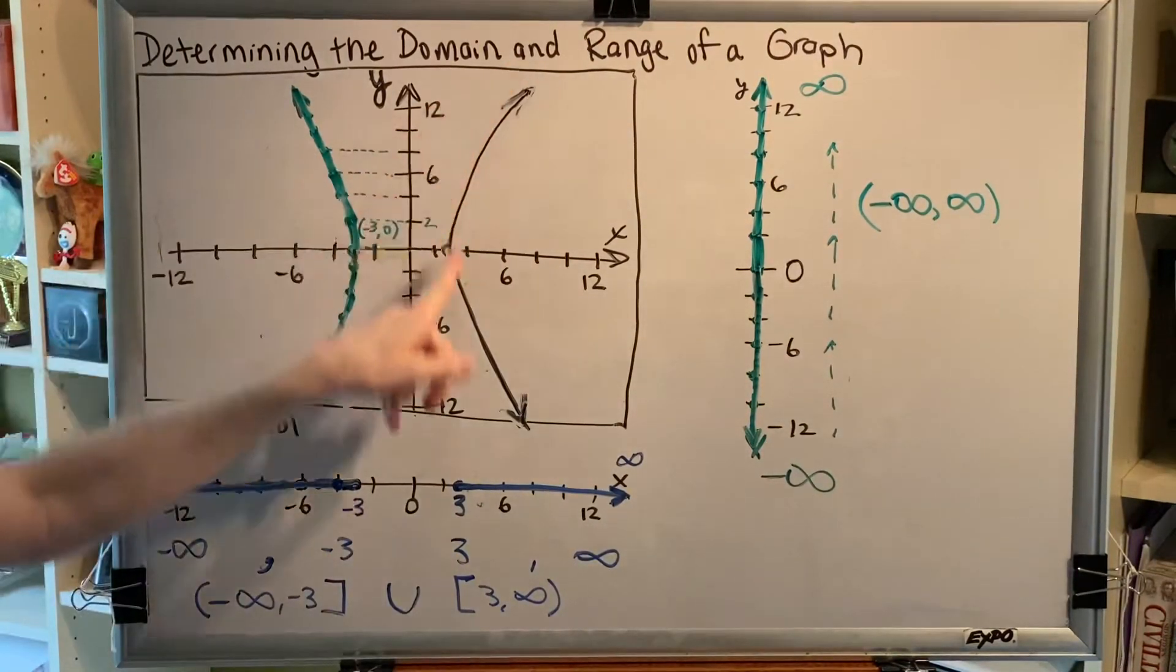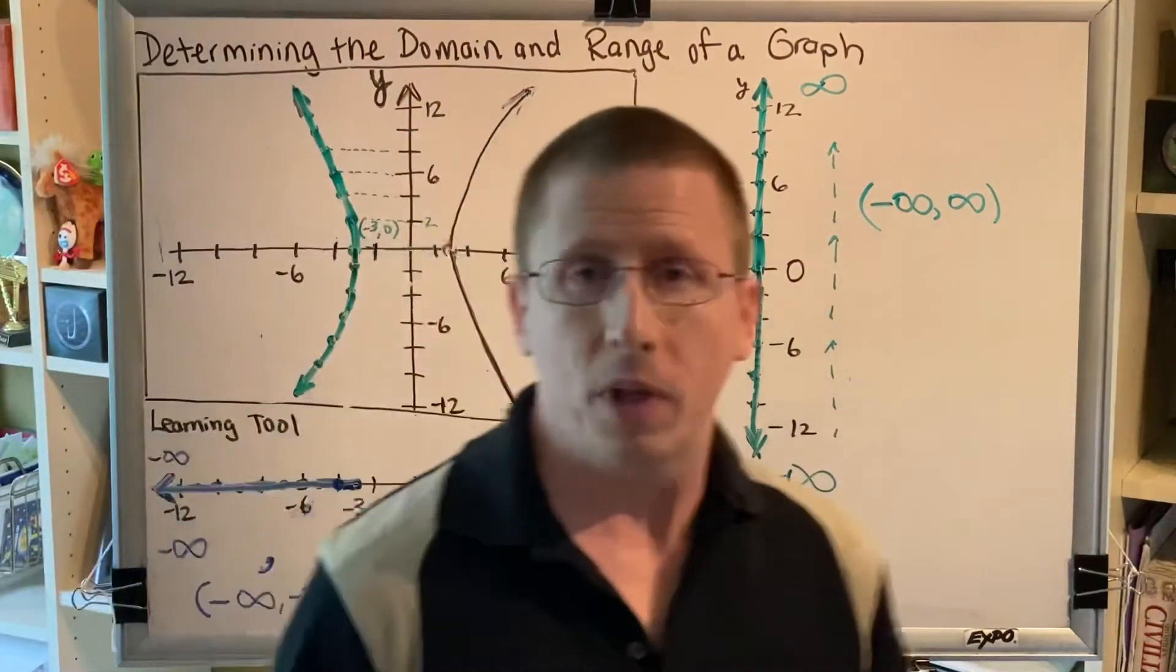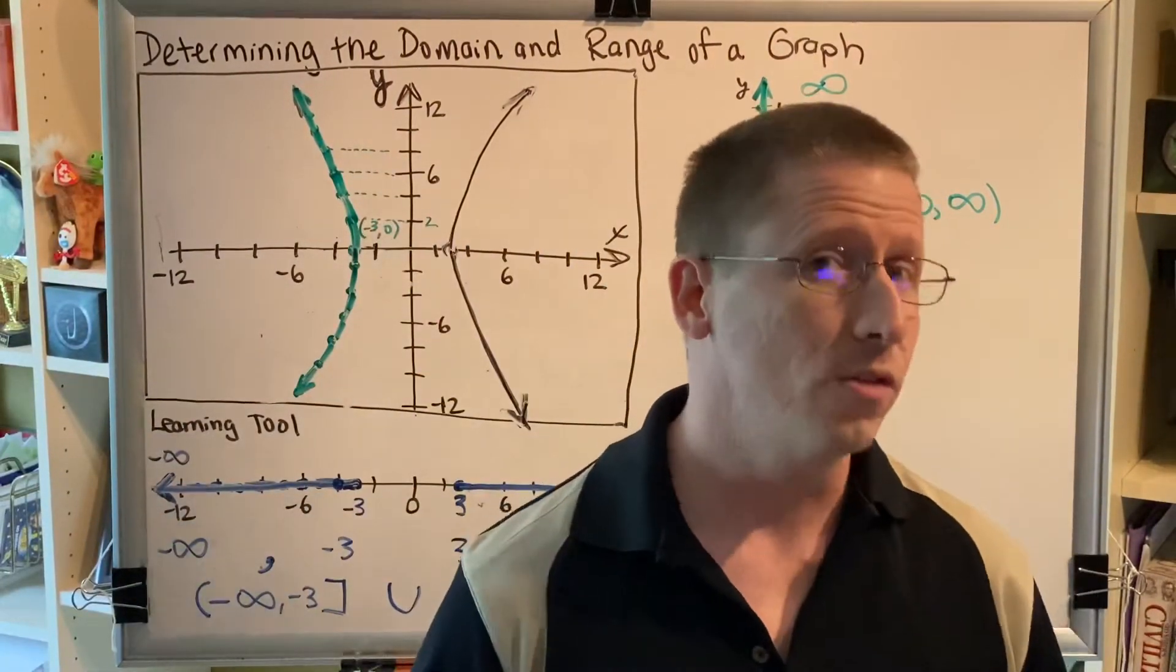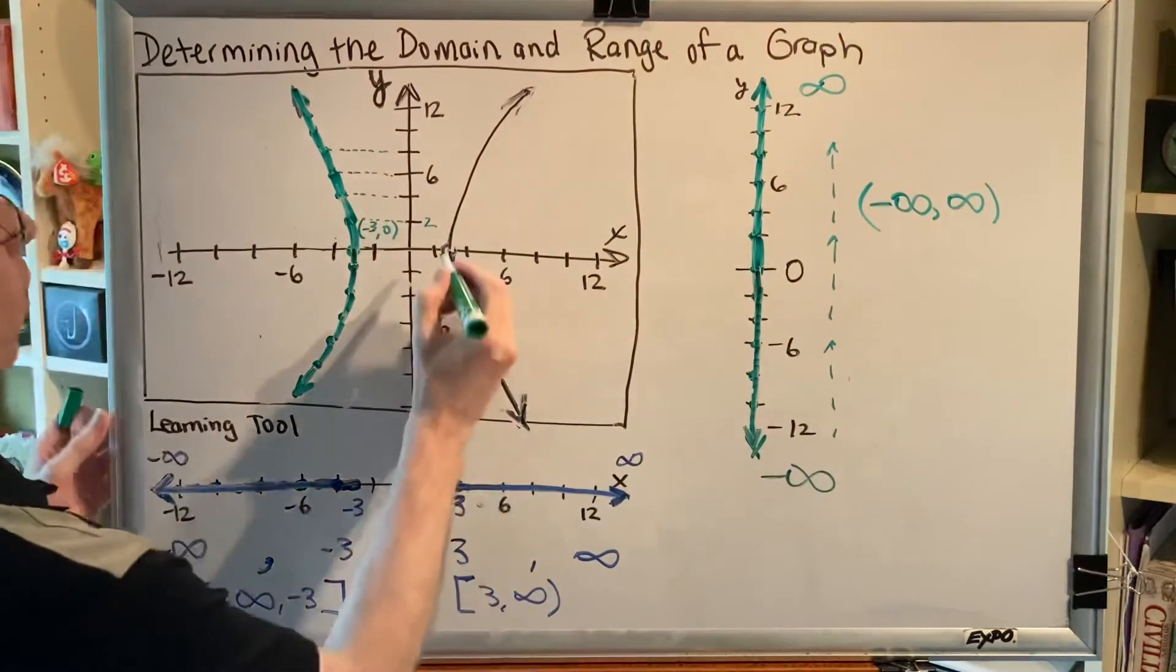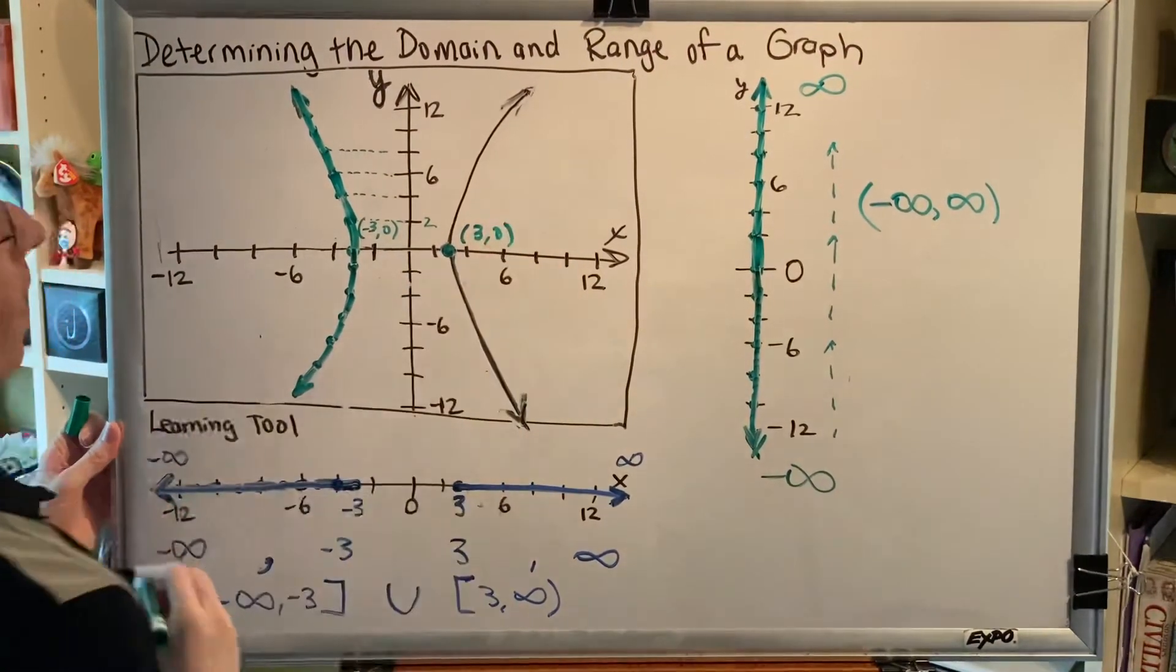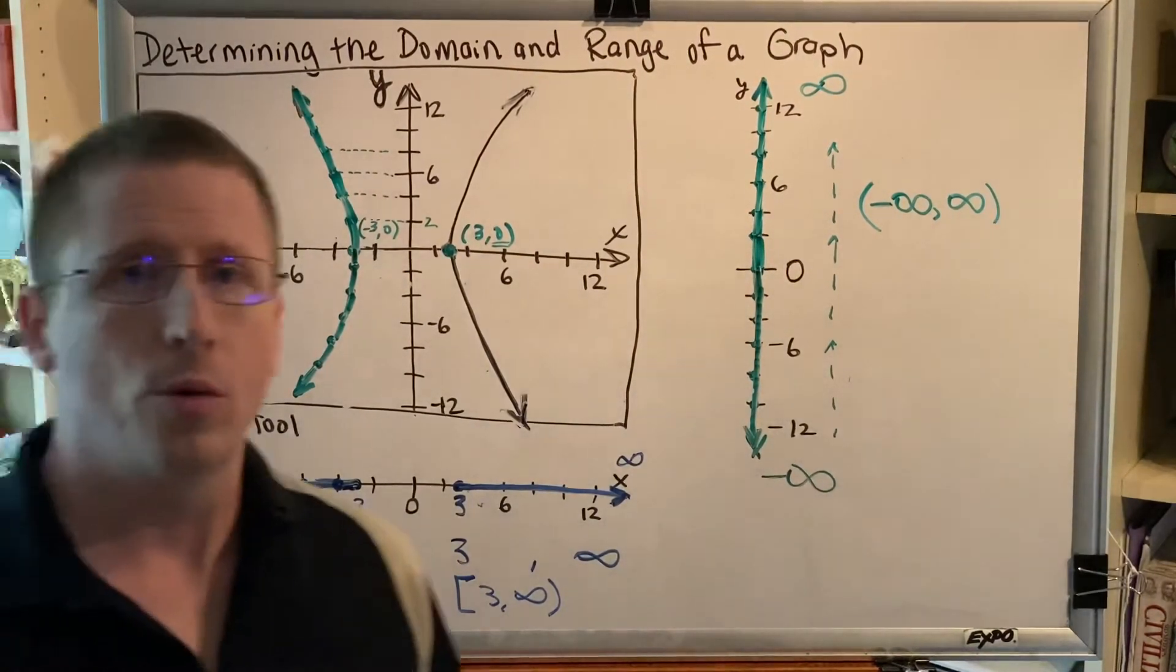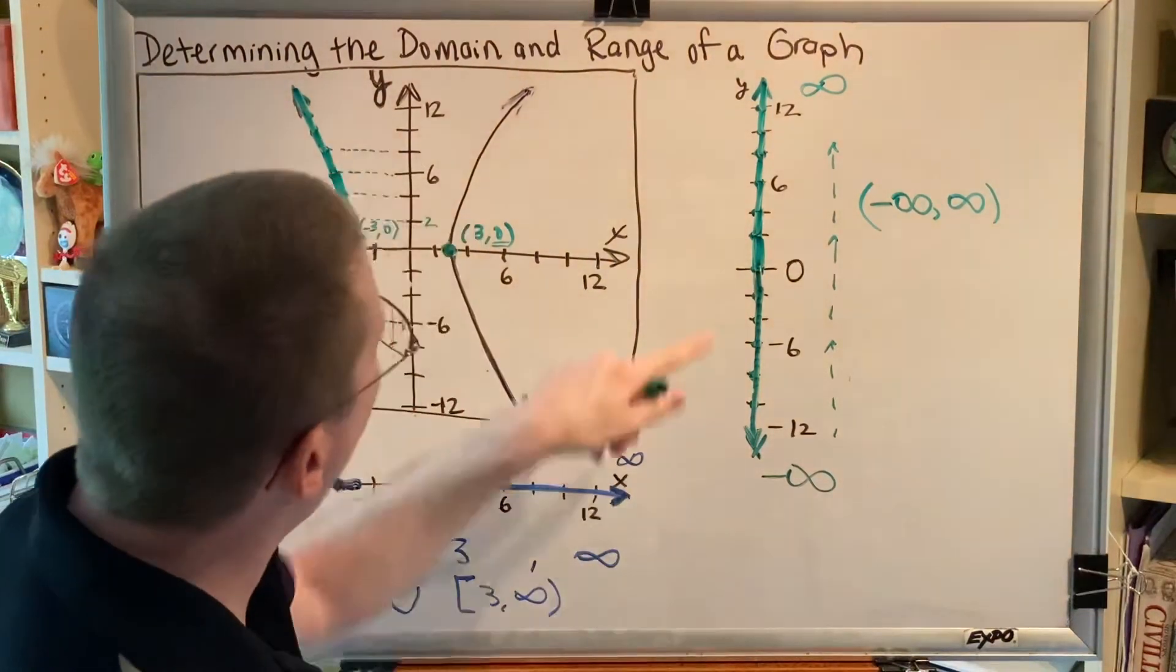Let's turn our attention now to the right wing of this graph. Remember, with domain and range, if a number is duplicated, we only list it once. So for example, this point right here is the point 3 comma 0, and the y-coordinate is 0. So we would theoretically add 0 to our range, but we already have 0. It's already shaded.